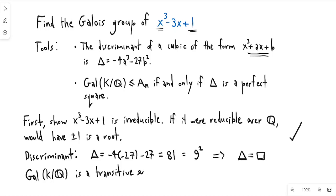So we know that the Galois group is a transitive subgroup of S₃. And there are only two transitive subgroups of S₃. The transitive subgroups of S₃ are the ones that contain a 3-cycle. So this is either A₃ or S₃.